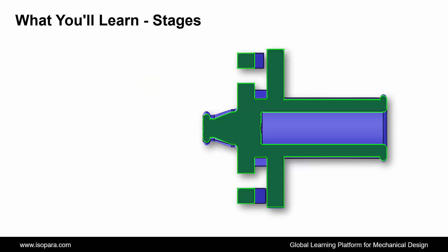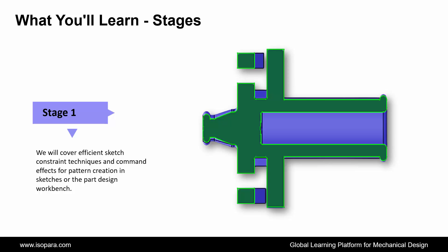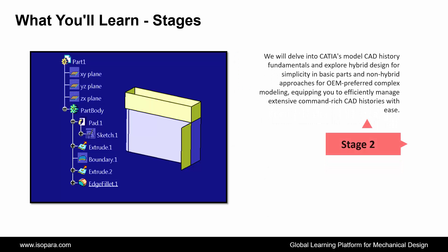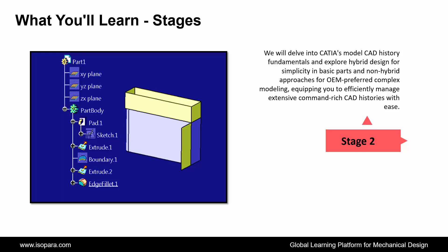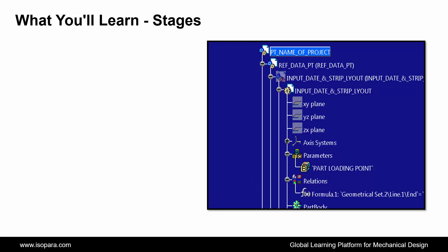Now we see the stages of what you will learn in this course. First, we will cover efficient sketch constraint techniques and command effects for pattern creation in sketches or the part design workbench. Second, we will delve into CATIA model CAD history fundamentals and explore hybrid design for simplicity in basic parts and non-hybrid approaches for OEM-preferred complex modeling, equipping you to efficiently manage extensive command-rich CAD histories with ease.